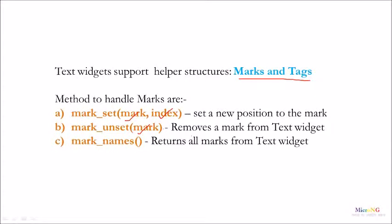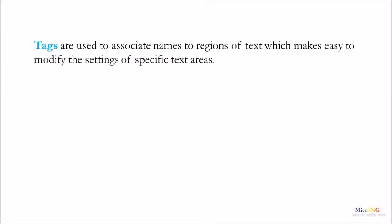The third method is mark_names. It will return all the marks which are present for the Text widget. All the set marks will be returned by using the mark_names method. Similar to marks, we can use tags. Tags are used to associate names to regions of text, which makes it easy to modify the settings of specific text areas.